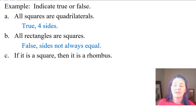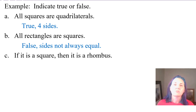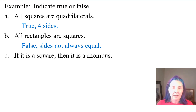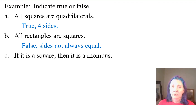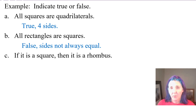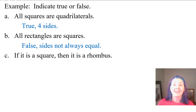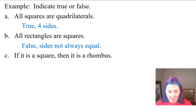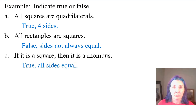How about if I said: if it's a square, then it's definitely a rhombus. Would that be true? Remember, the definition of a rhombus is a parallelogram that has all equal sides. So if a square meets those characteristics, then that would be true. And it does. A square is a parallelogram — we don't call it a parallelogram, we call it a square — but in fact it does have two pairs of parallel sides and all the sides are equal. Those are the two characteristics of a rhombus. So that statement would be true.